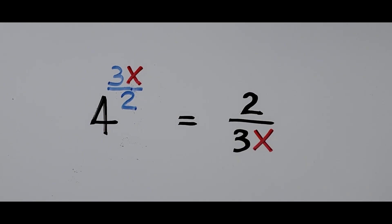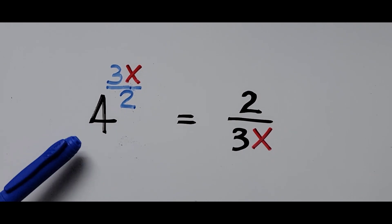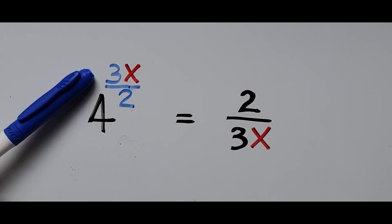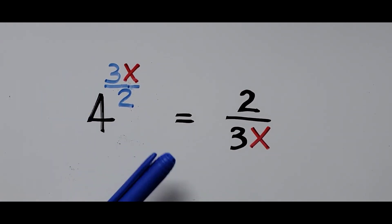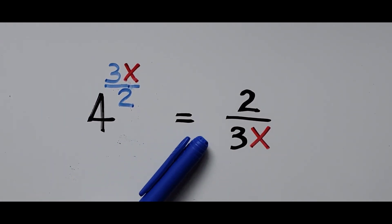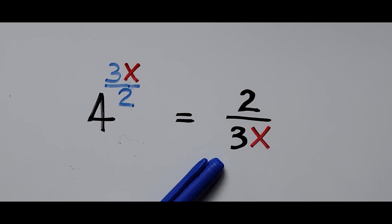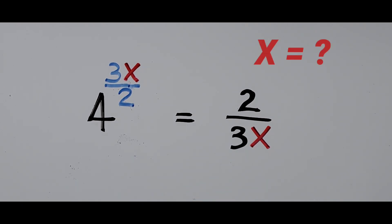Hello everyone, we have here an exponential equation: 4 to the power of 3x divided by 2, equals 2 divided by 3x. We're solving for the value of x.